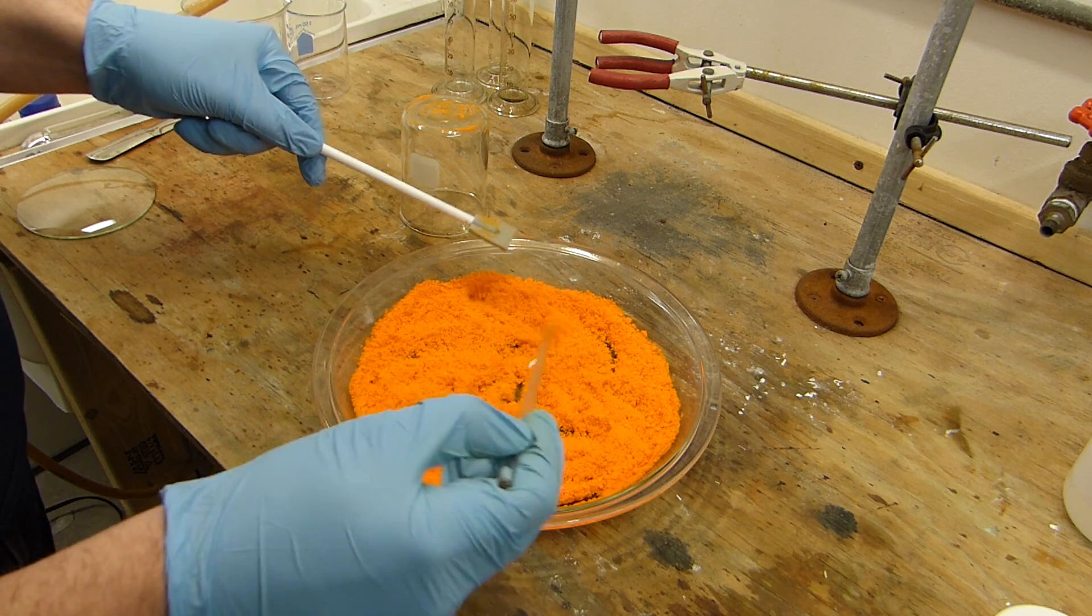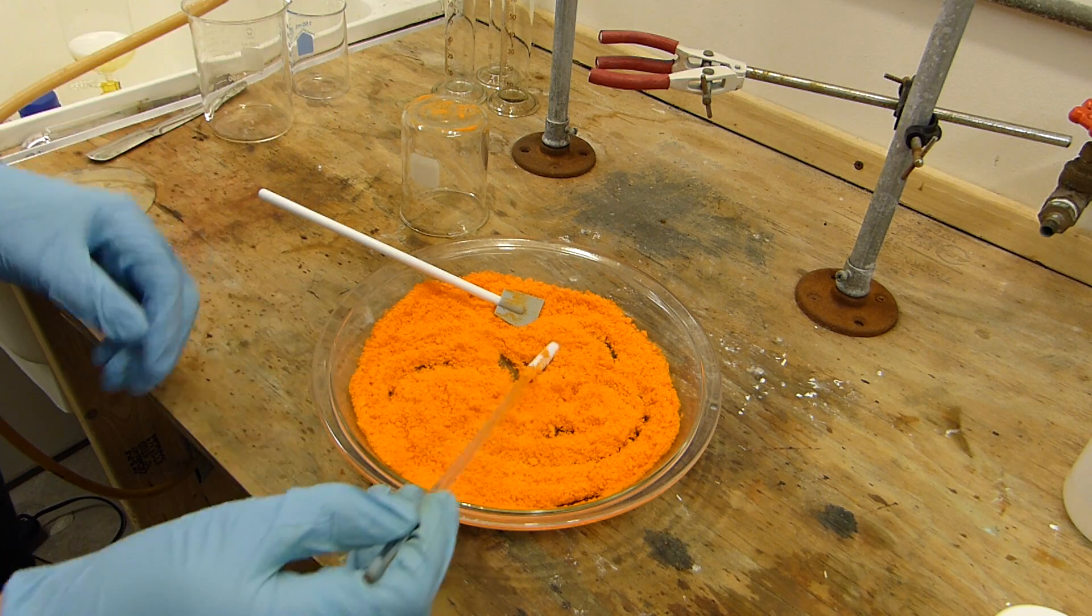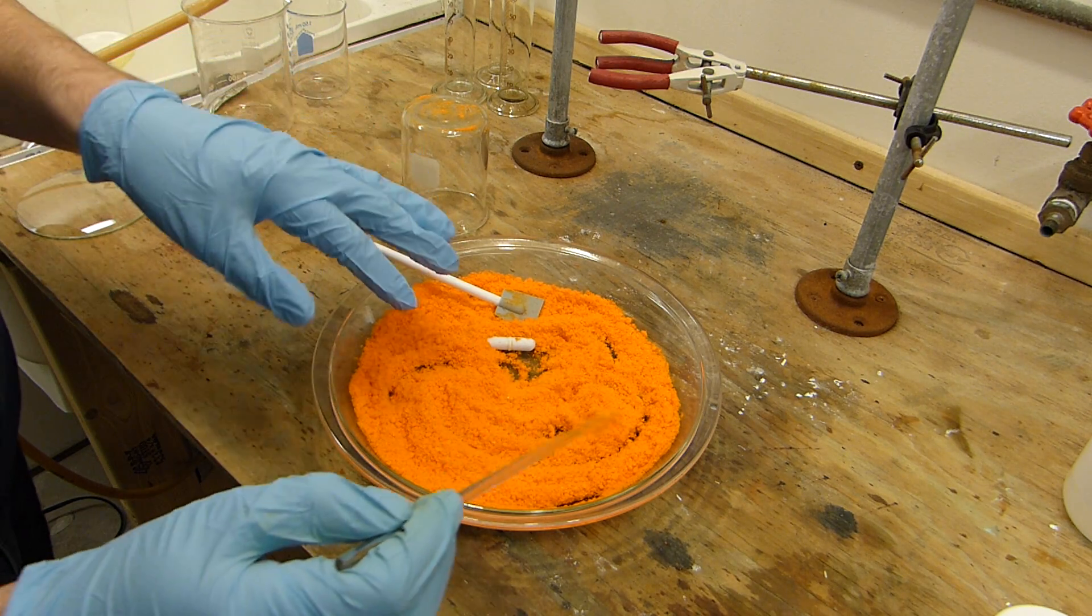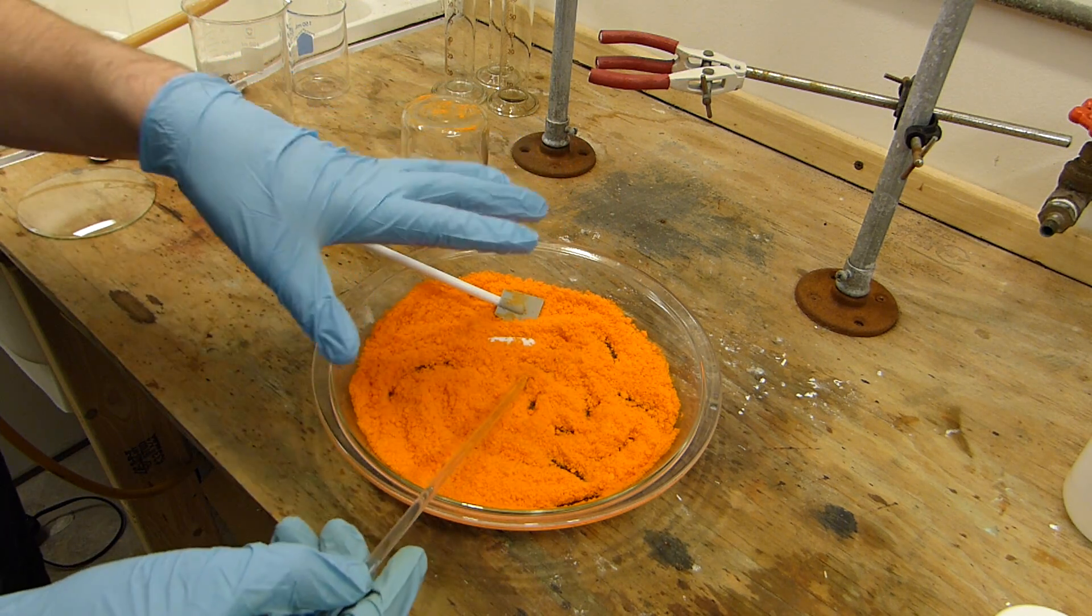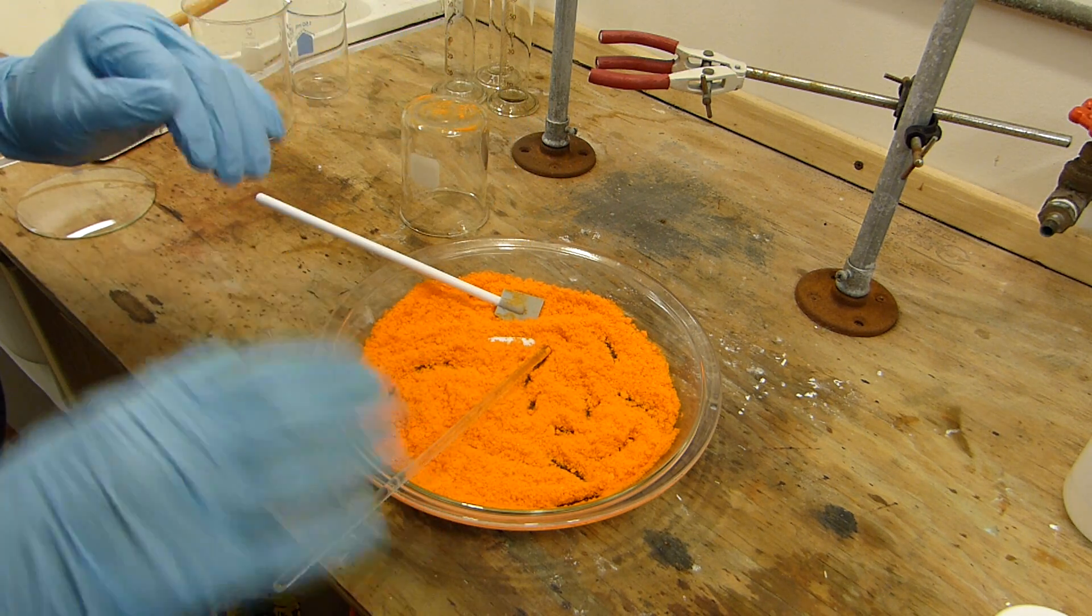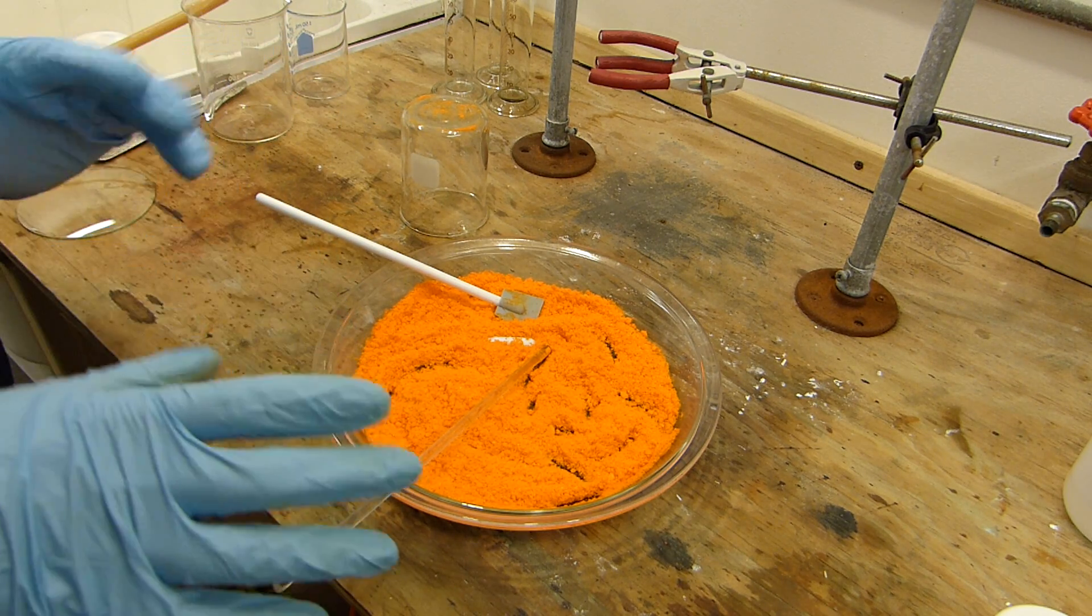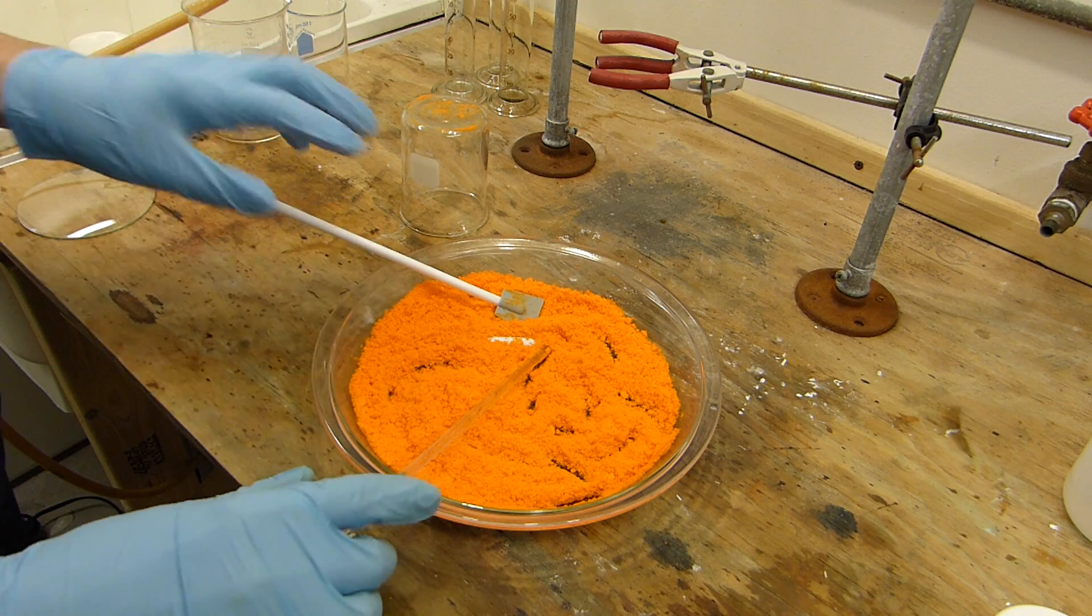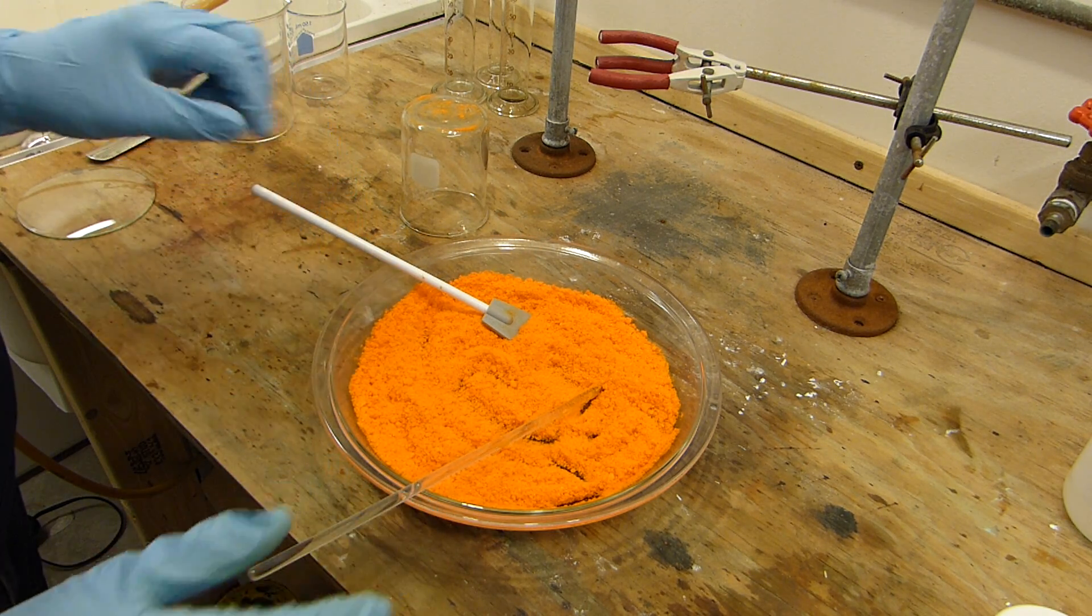All right so here is the dry pyridinium chlorochromate product and I'm just going to put this in a bottle. I initially put this on a water bath but unfortunately it looked like the water bath had begun to melt this. I don't think it was actually melting, I think it was dissolving in the remaining solution that was wetting it, but I didn't want to take any chances with decomposition so I decided to take it off the water bath and leave it overnight instead. So after overnight this is the final product.